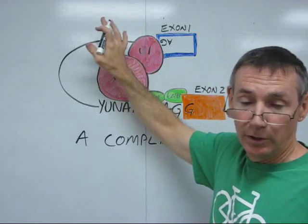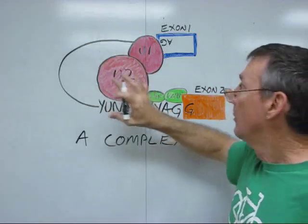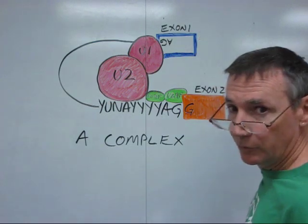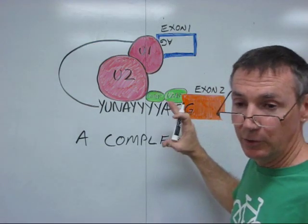And this loop can be very long. It can be thousands of nucleotides. By folding it over like this, it brings the first exon into close proximity with the second exon that it's going to be joined to.